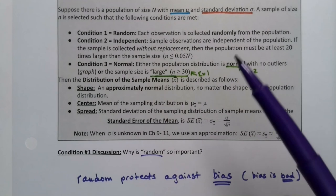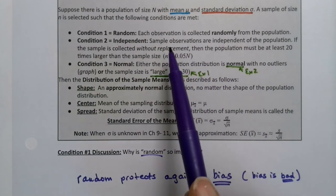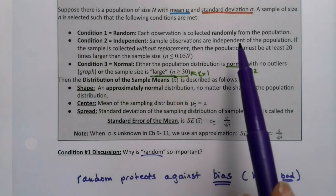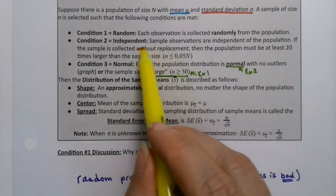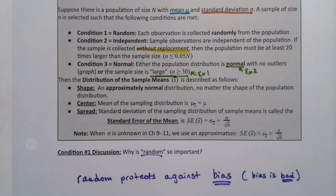So randomness protects against that bias. Now independence. Let's look at this for just a second. You want your sample observations to be independent of the population. If the sample is collected without replacement, then the population must be at least 20 times larger than the sample size. So notice it's saying without replacement, meaning we learned in chapter five, if you sample without replacement, that's not independent. That's dependent. What's going on here?